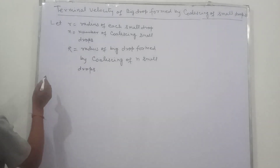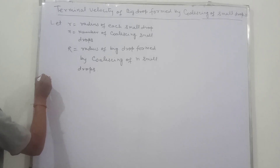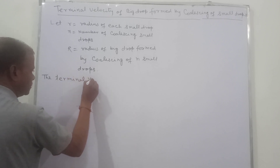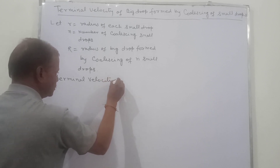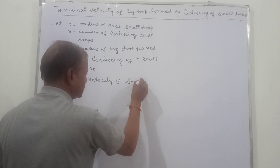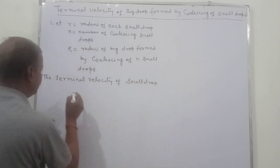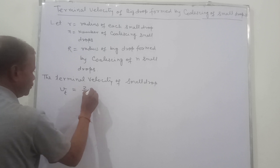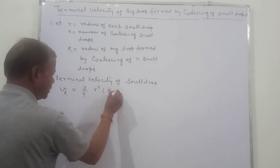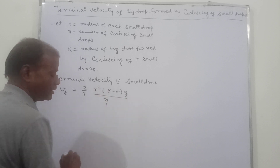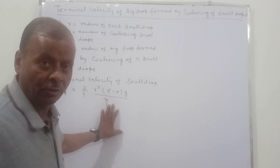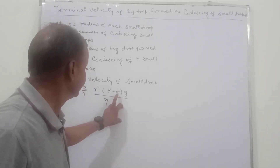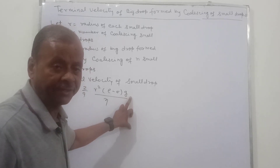Now we have the terminal velocity of the small drop. This Vt is equal to (2/9) r² (ρ − σ) g / η, where ρ is the density of the drop, σ is the density of the medium, η is the coefficient of viscosity, and g is the gravitational acceleration.